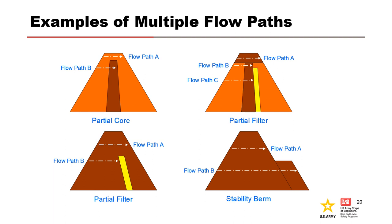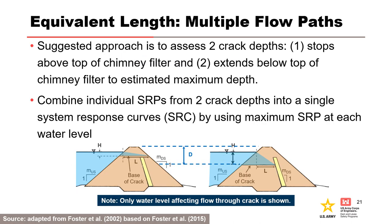Lastly, at the bottom right, this dam has no filters and the downstream berm lengthens the flow path for concentrated leak erosion. The crack depth D may span two different flow paths. The suggested approach is to assess two crack depths individually: first, the base of the crack is at the top of the inclined chimney filter, and second, the base of the crack extends below the top of the inclined chimney filter to the maximum crack depth. The individual system response curves from two crack depth scenarios can be combined into a single system response curve by using the maximum system response probability at each water level.